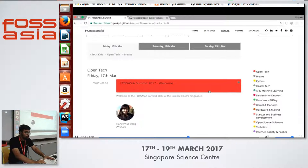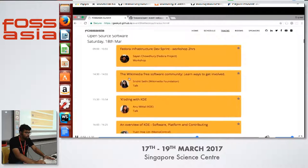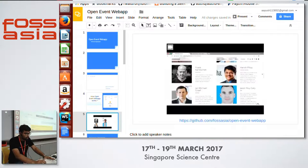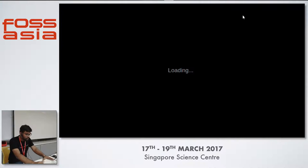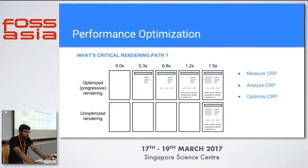The web app you are using right now at this event is generated with this application. Going back to the presentation — here is the main topic I'm going to cover: how we have done performance optimizations in this web app. We haven't completed it fully, but we are in progress mode. I'll brief you about what this is all about and why people should care about performance optimization on the client side.